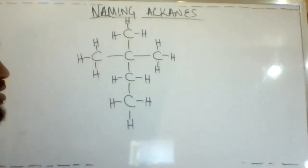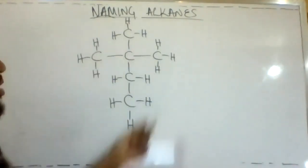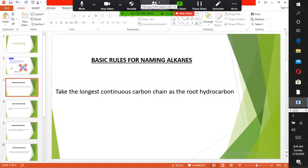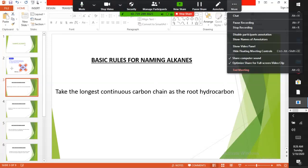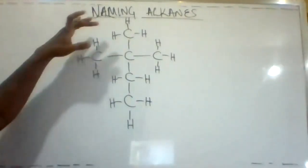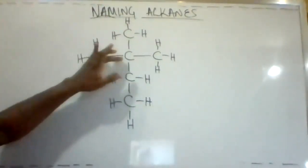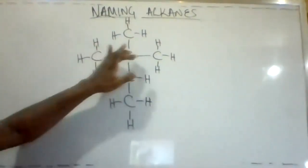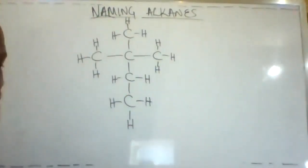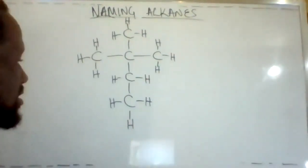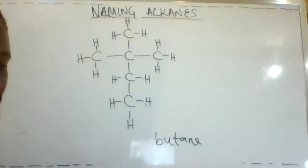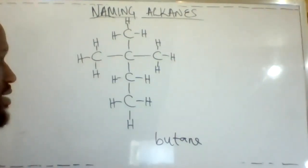Now our third example — how do we name this kind of structure? Going back to rule one: take the longest continuous carbon chain as the root hydrocarbon. The longest continuous carbon chain here is 1-2-3-4, four carbons. Therefore, the parent name for this is butane.